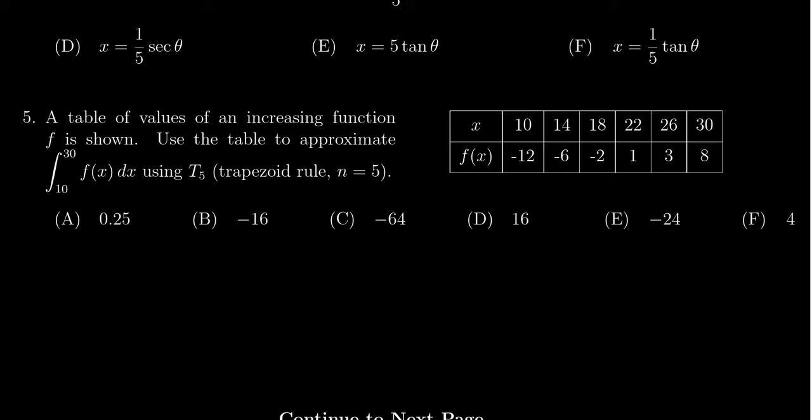Some things to note is that 10 is the boundary on the left, so this is our a value. 30 is the boundary on the right which is our b value. To approximate using the trapezoidal rule T5, we're going to take delta x over 2 times...